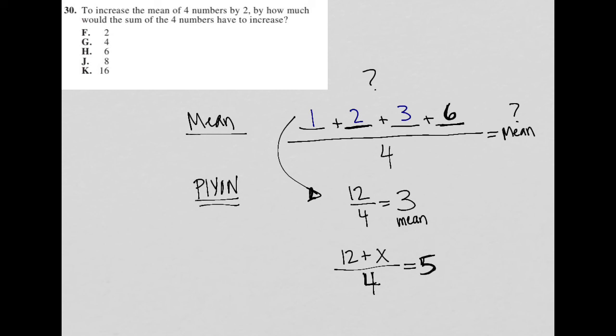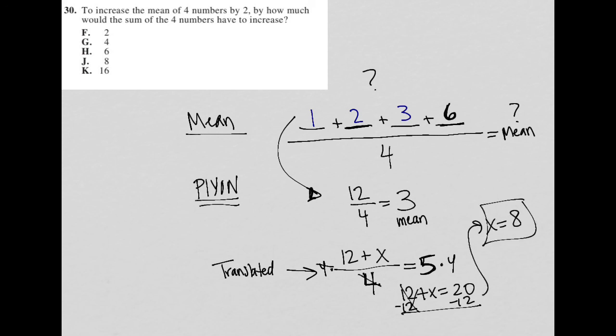So as you can see, I just translated that understanding into this equation. And now I just have to solve for X. So if I multiply both sides here by four, my four is crossed out. I'm left with 12 plus X equals 20. And then I could solve for X by subtracting 12 from both sides. And I'm left with X is equal to eight. And then I look at my answer choices and I see that eight is choice J.